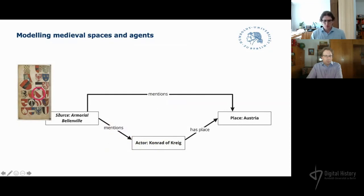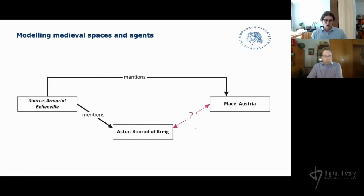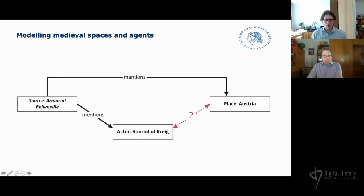An unsophisticated model to represent the relations between the source, the personal actor, and the place Austria may look like this: the source mentions a place and the person in question, and from that we can infer a relation between the person and the place. But what does this relation between person and place actually mean? When we include other sources about Conrad of Kraig, it becomes evident that such allocations are not feasible or at least they don't cover every aspect.